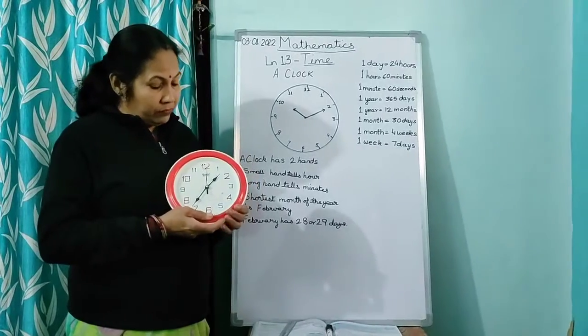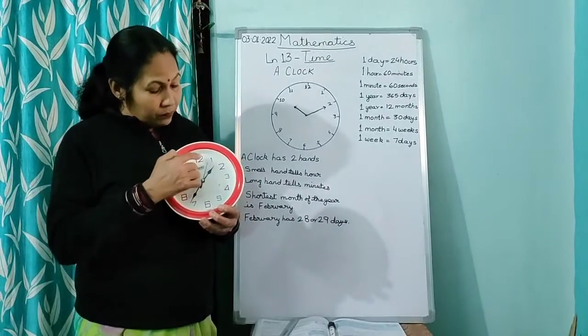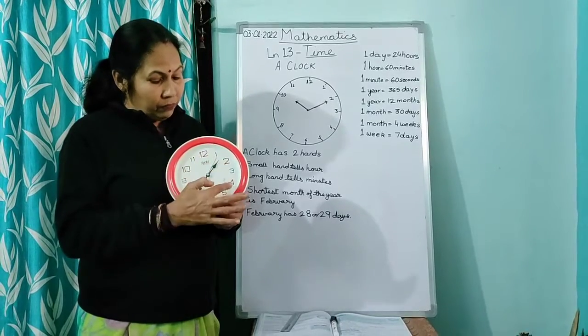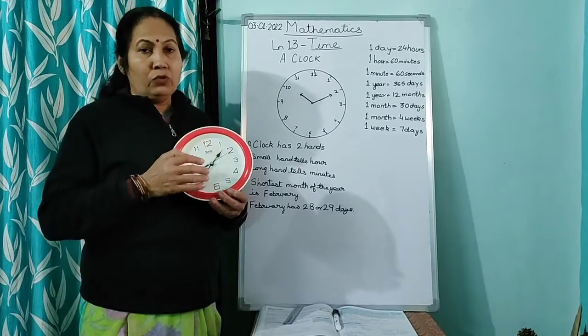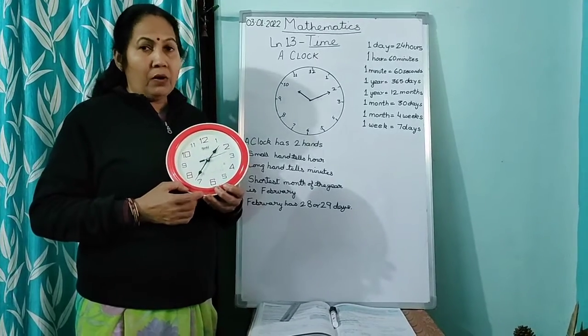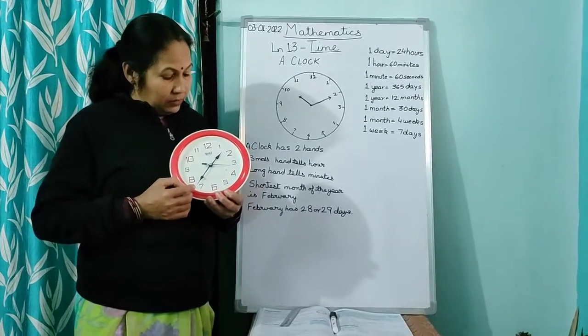Now children, you can see here, 12 numbers are written: 1, 2, 3, 4, 5, 6, 7, 8, 9, 10, 11, 12. So we will study about the 12 hour clock time. Now in this, you have 5 minutes between each gap.